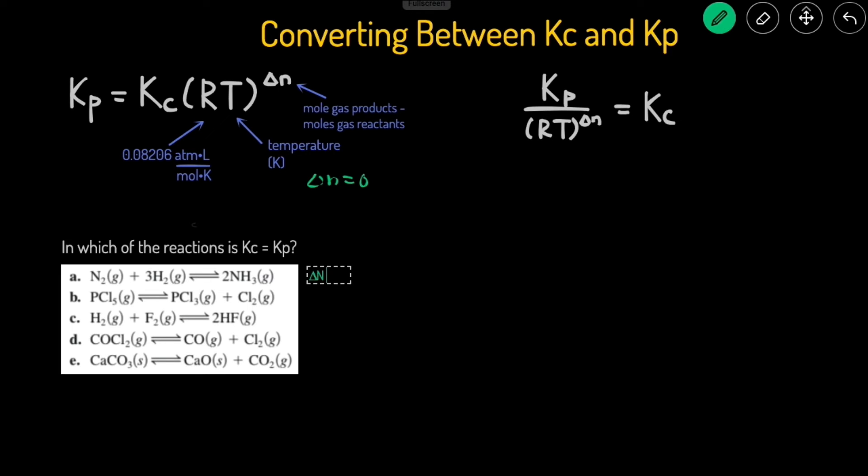In the first one, delta N is going to equal 2 moles of gas on the product side minus the total of 4 moles of gas on the reactant side, so that would be negative 2. So that's not the answer. In part B, delta N change in the moles of gas is going to equal 2 moles of gas, 1 plus 1, on the product side minus 1 on the reactant side, and that's 1. So that's not the answer, because we were looking for a change in delta N equals 0. C, we have 2 moles on the reactant side minus 2 moles of gas on the product side, so that's 0. So we know that C is the situation when Kc is going to equal to Kp.